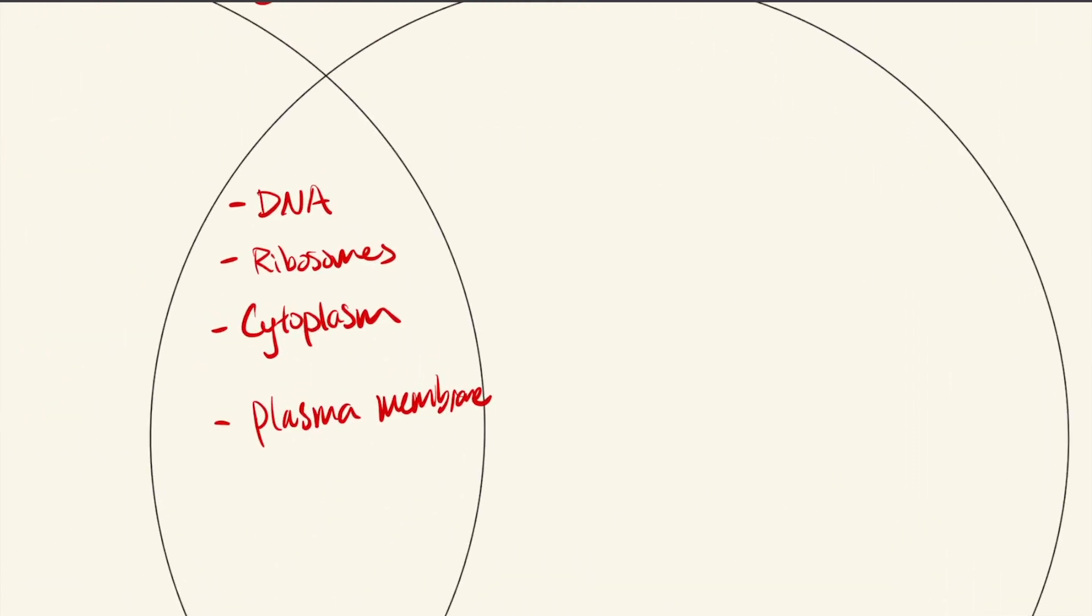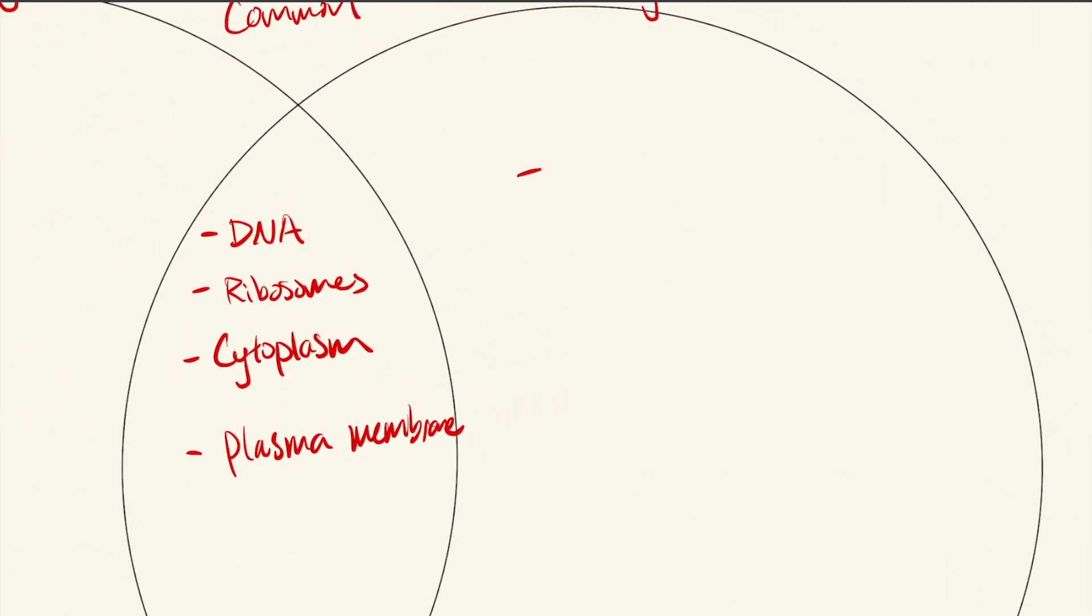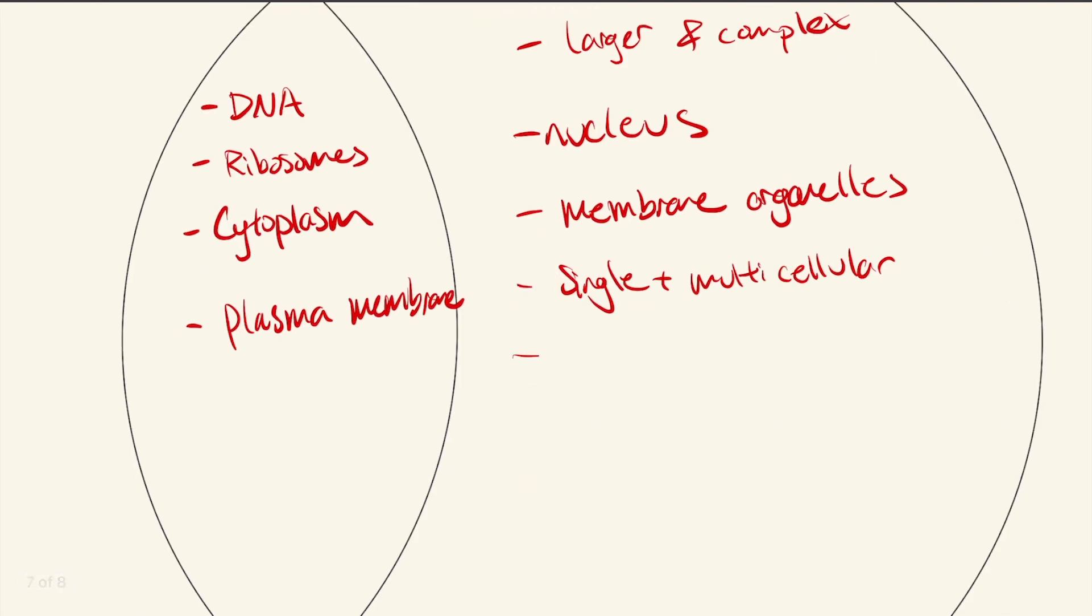So eukaryotic cells, as I said before, they're much larger and complex. They have a nucleus. They have several membrane-bound organelles. And they can be single-celled or multicellular, which is different from a prokaryotic, which is only single-celled. And their chromosomes, eukaryotic chromosomes, are linear.